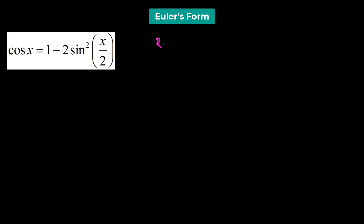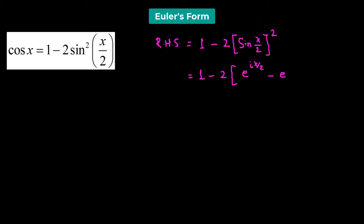On the right hand side we have 1 minus 2 times sine(x/2) whole squared. We are going to convert the sine function to its equivalent Euler's form: e raised to the power of i(x/2) minus e raised to the power of negative i(x/2), whole divided by 2i, whole squared.